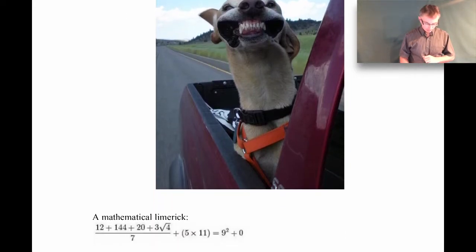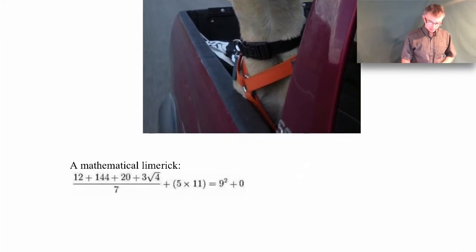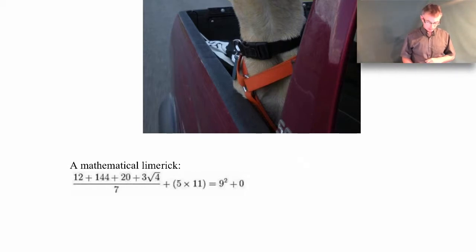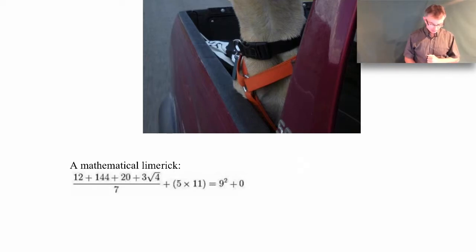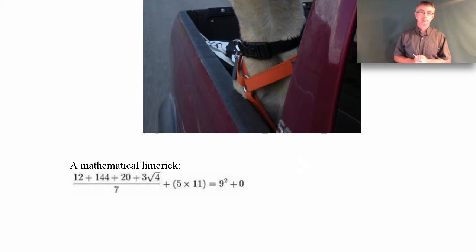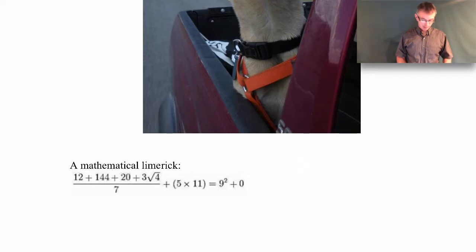I have here a mathematical limerick, totally unrelated to fluid mechanics, but I thought it was kind of neat. Think about what that equation says — the numbers are accurate, but it's actually a limerick. What it says is: a dozen, a gross, and a score plus three times the square root of four divided by seven plus five times eleven equals nine squared and not a bit more. You can share that with your friends at a party.